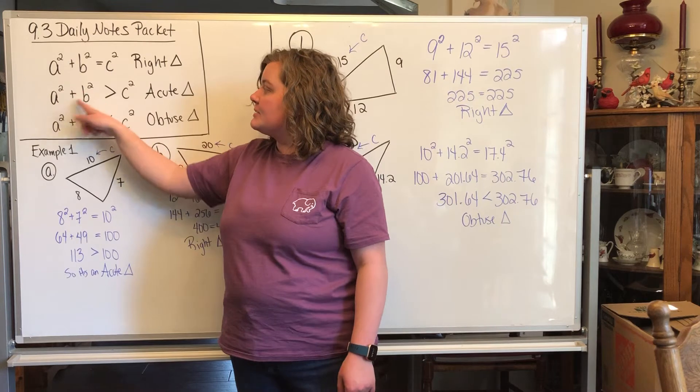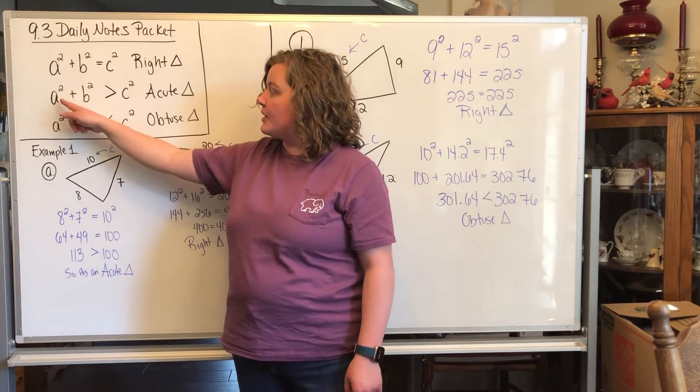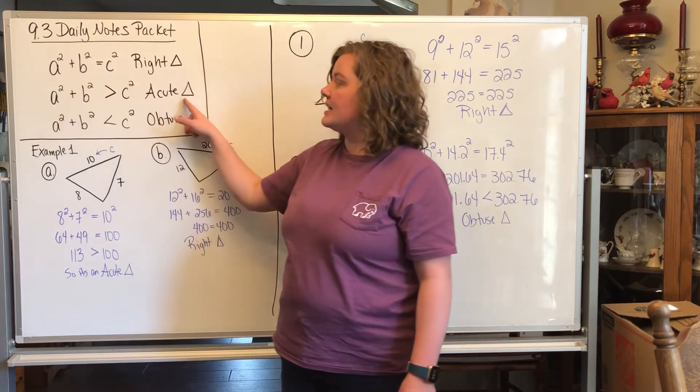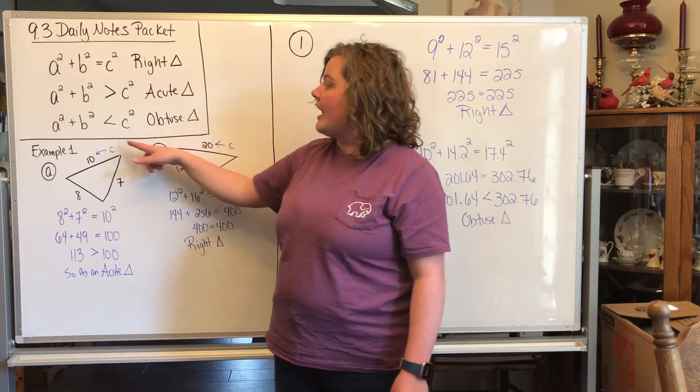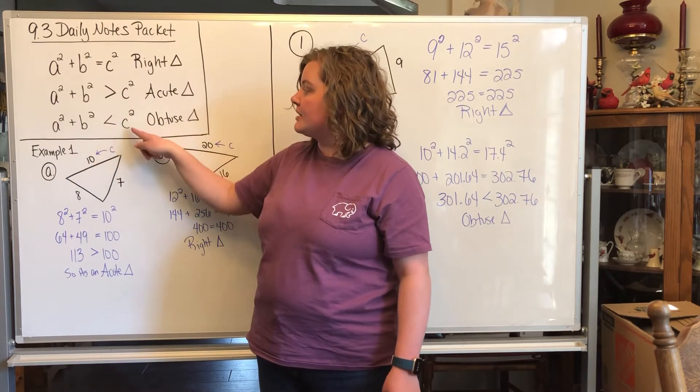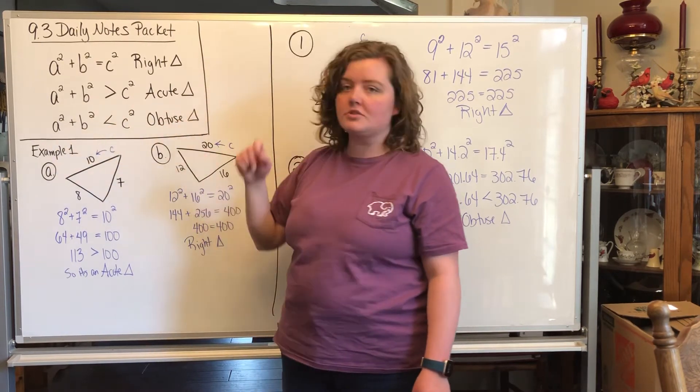If you do a² + b² and you get a bigger number than c², so this is greater than, then this is actually an acute triangle. And if you do a² + b² is less than c², so this side is bigger than this side, it's an obtuse triangle.